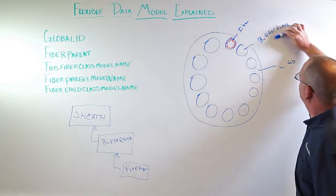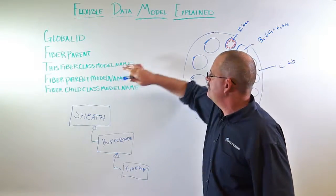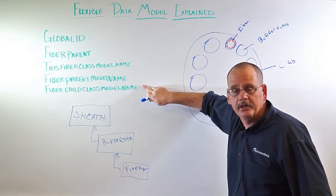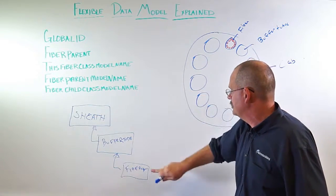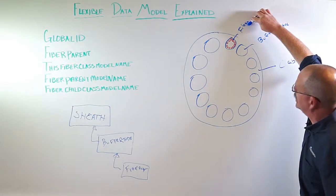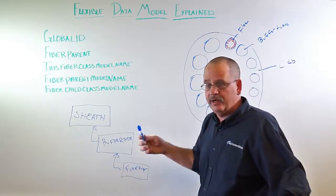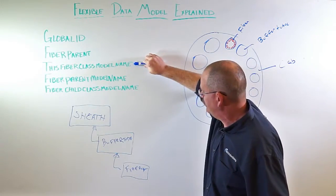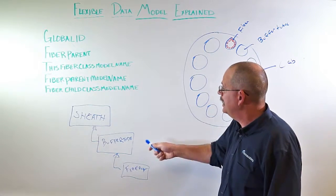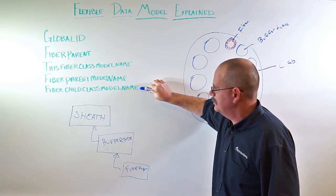When we're talking about the buffer tube table, this fiber class model name is buffer tube, where the fiber child is equal to a fiber strand. When we're talking about the fiber strands, the only thing we have to assign is this fiber class model name equals fiber strand, because there is no child of a fiber strand.